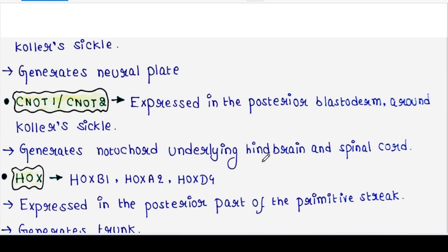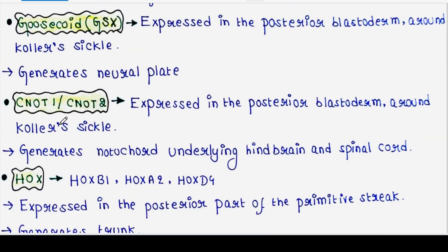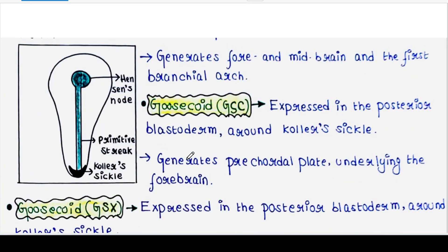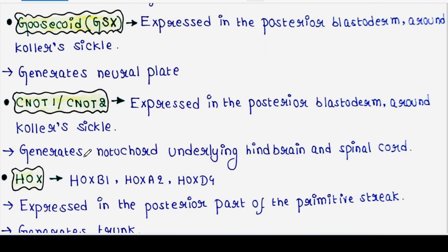Next is CNOT1 and CNOT2. These two genes are expressed in the posterior blastoderm around Koller's sickle. They generate notochord underlying hindbrain and spinal cord.